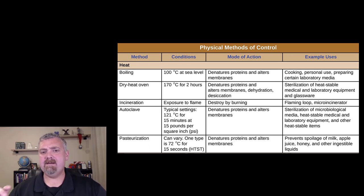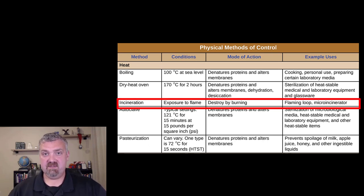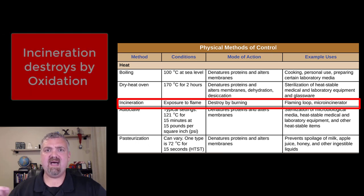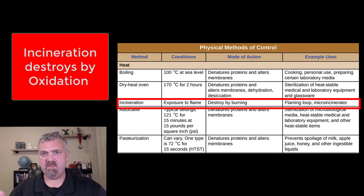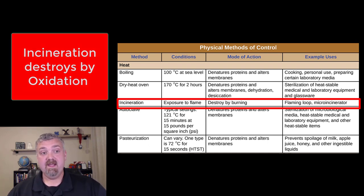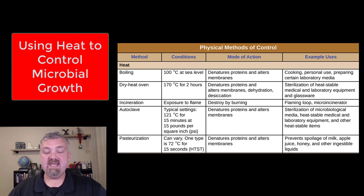The last one here is incineration. You can certainly burn and incinerate things. The key example we use in the lab would be flaming our wire loops. It says here it destroys by burning, but the term I like to use is destroys by oxidation. You're oxidizing, peeling electrons off of or burning electrons off of whatever is on that wire loop when you sterilize it. Using incinerators, flaming your wire loops with a Bunsen burner, these are examples of using incineration. That is moist versus dry heat.